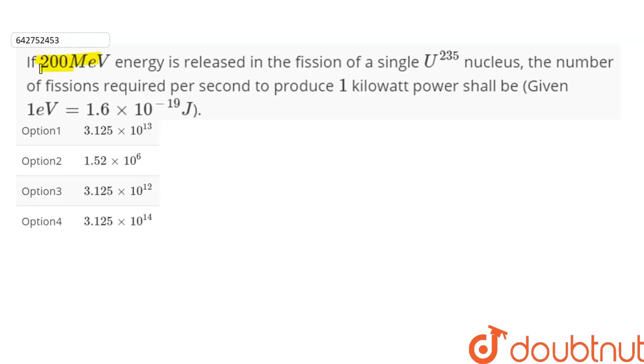If 200 MeV energy is released in the fission of a single U-235 nucleus, the number of fissions required per second to produce 1 kilowatt power shall be: Option 1: 3.125 × 10^13; Option 2: 1.52 × 10^6; Option 3: 3.125 × 10^12; and Option 4: 3.125 × 10^14.